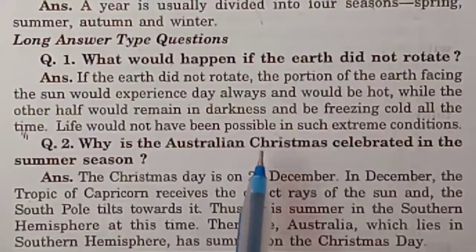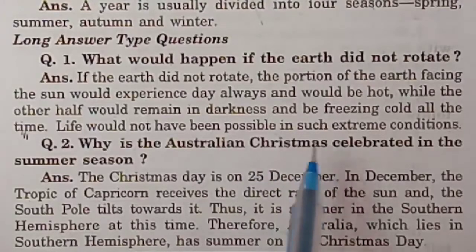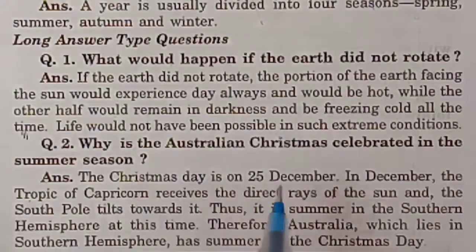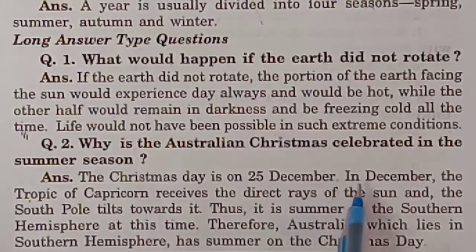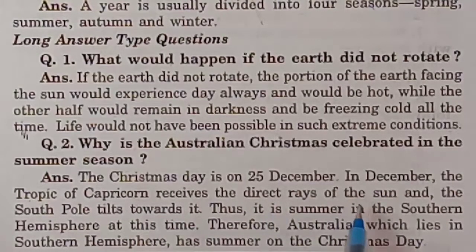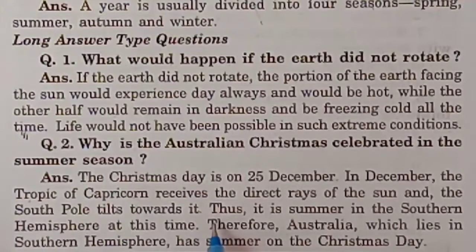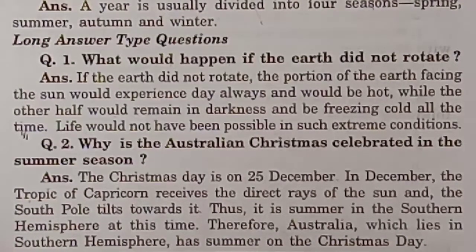Why is Christmas in Australia celebrated in the summer season? Christmas day is on 25th December. In December, the Tropic of Capricorn receives the direct rays of the sun and the south pole is tilted towards it. Thus, it is summer in the southern hemisphere at this time. Therefore, Australia, which lies in the southern hemisphere, has summer on Christmas day.